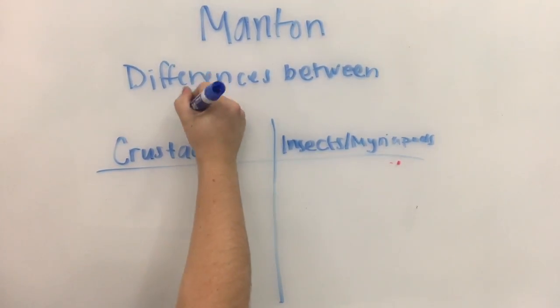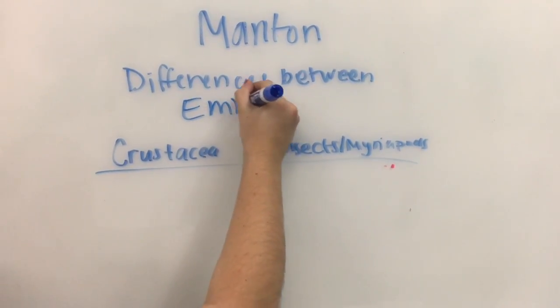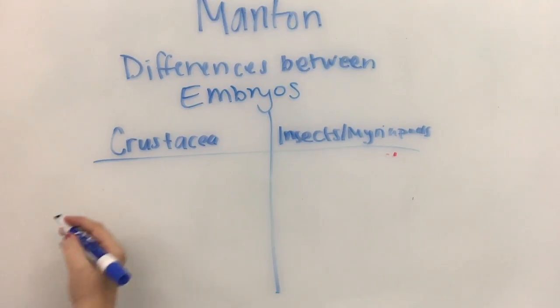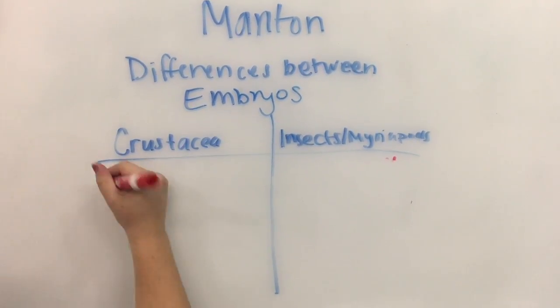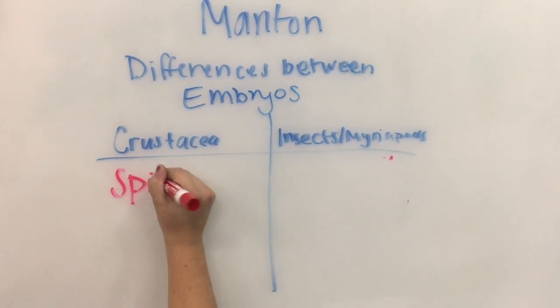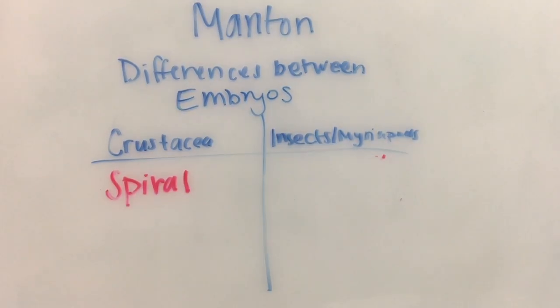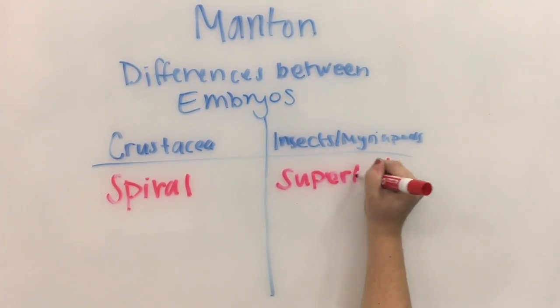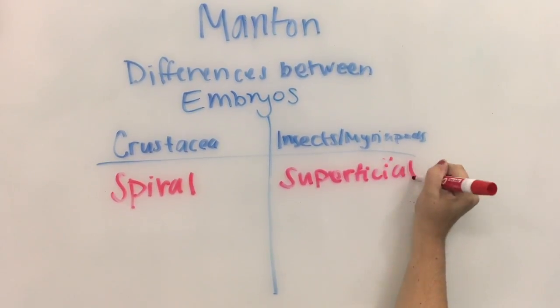Manton also believed that all other arthropods that evolved from Annelida worms were more similar to the Onychophora than Crustacea. Anderson learned that initial cell division in crustacean embryos is a spiral cleavage, whereas the eggs of all other arthropods are superficial cleavage, and the eggs of all known annelids are spiral cleavage.